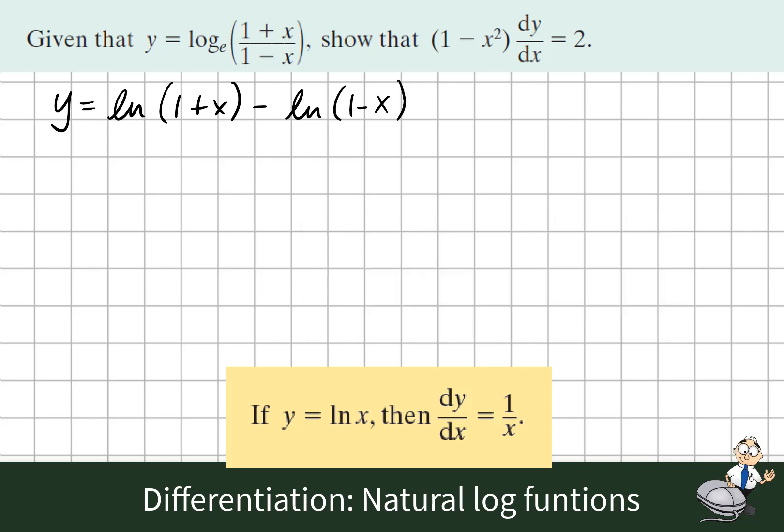And now we're going to differentiate each of these separately. The derivative of the natural log of x is 1/x. Here we're using the chain rule. So the answer is 1/(1+x) multiplied by the derivative of (1+x). And in the second one it's minus 1/(1-x) multiplied by the derivative of (1-x), which is negative 1.